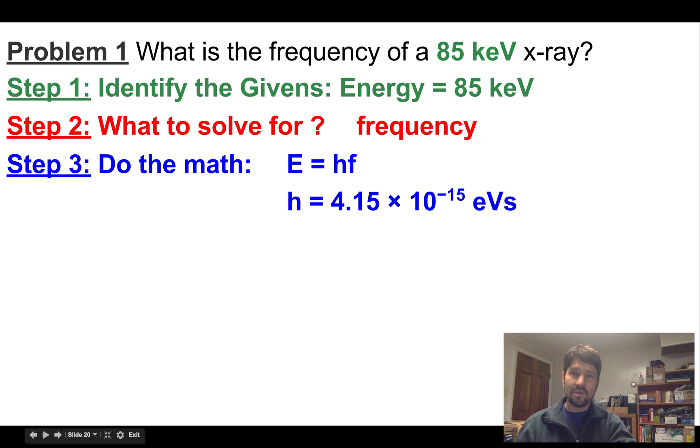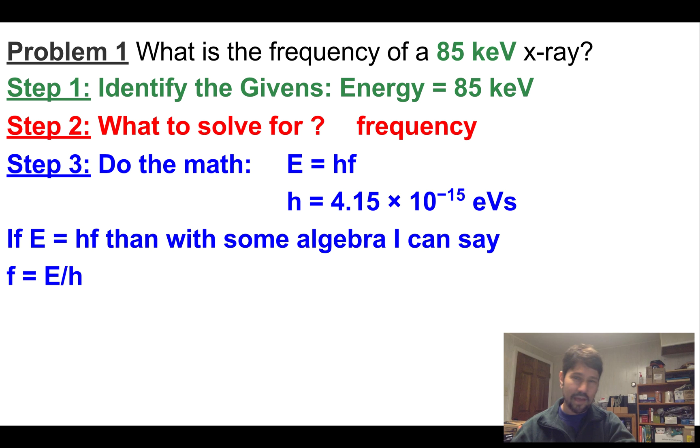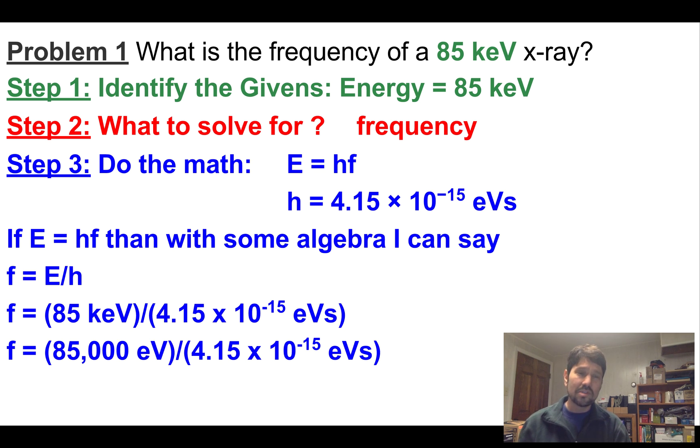So we write down Planck's constant, we write down our formula. We're halfway there. So now with a little algebra, we can flip that formula around to say frequency equals energy divided by Planck's constant: 85 keV divided by 4.15 times 10 to the negative 15th eVs. Well wait, I see keV in the numerator and eVs in the denominator. I better convert. I better lose that kilo electron volts and just call it 85,000 electron volts.